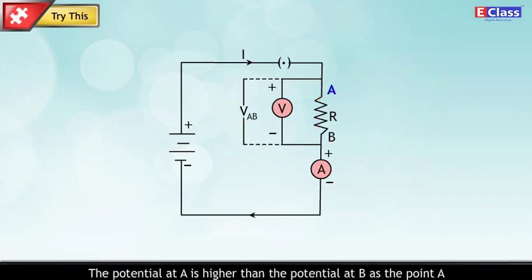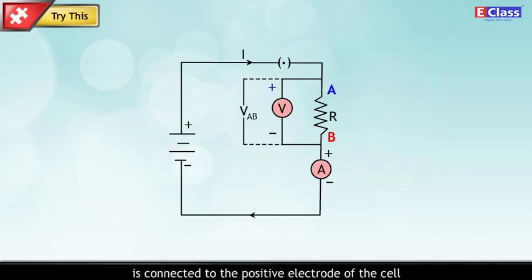The potential at A is higher than the potential at B, as the point A is connected to the positive electrode of the cell and the point B to the negative electrode of the cell.